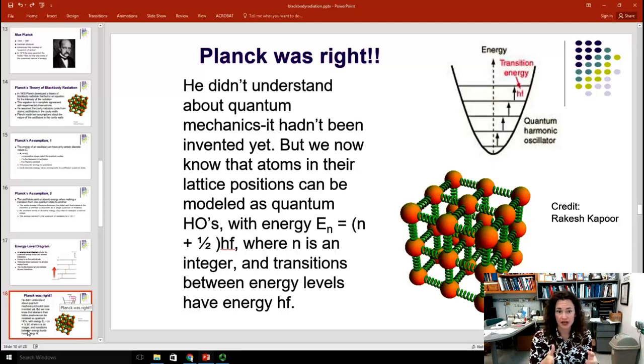We now know, though, that even without quantum mechanics, that atoms in their lattice positions can be modeled as quantum harmonic oscillators. Now, quantum mechanics and the Schrödinger equation will actually predict energy levels of (n + 1/2) times hf, where n is an integer. And the transitions between the energy levels have energy E is equal to hf. So, he was only off by a factor of plus one-half. Other than that, he was totally right, which is pretty amazing for not having quantum mechanics.